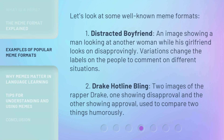Let's look at some well-known meme formats. First, Distracted Boyfriend: an image showing a man looking at another woman while his girlfriend looks on disapprovingly. Variations change the labels on the people to comment on different situations. Second, Drake Hotline Bling: two images of the rapper Drake, one showing disapproval and the other showing approval, used to compare two things humorously.